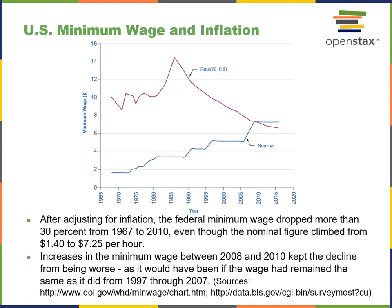Going back to wages and inflation: this pair of curves shows relative buying power with respect to the minimum wage over time. The buying power dropped more than 37% from 1967 to 2010, with the nominal figure going from $1.40 to $7.25 an hour. So there's the real amount of minimum wage versus the nominal amount. Increases in the minimum wage in 2008 and 2010 kept things from being worse, but this illustrates what people were talking about — the buying power of their money at any given point in time.